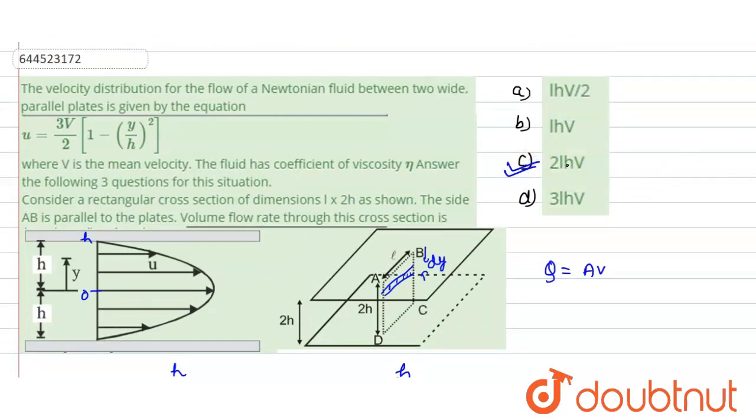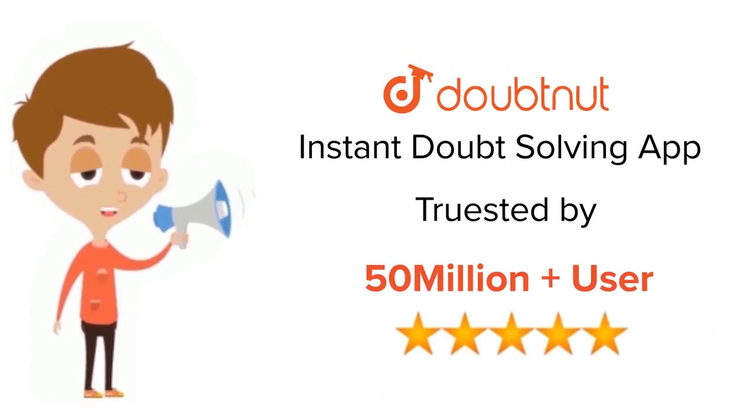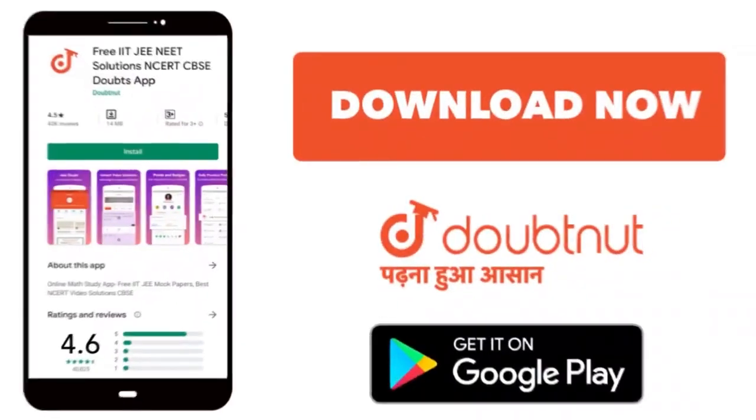Which is the correct option: 2h into V into l. So this would be the correct option, 2lhV. So C is the correct option. Hope you understood the solution. Thank you. For class 6-12, ITG and NEET level, trusted by more than 5 crore students, download Doubtnet app today.